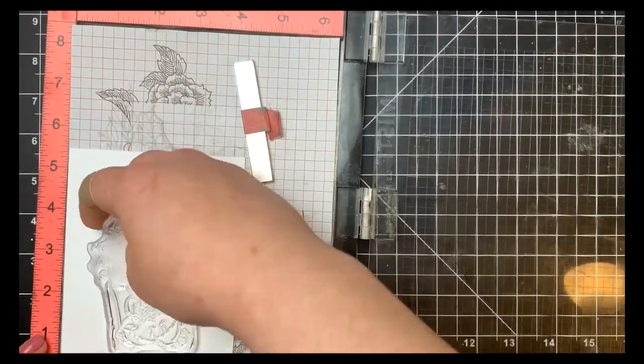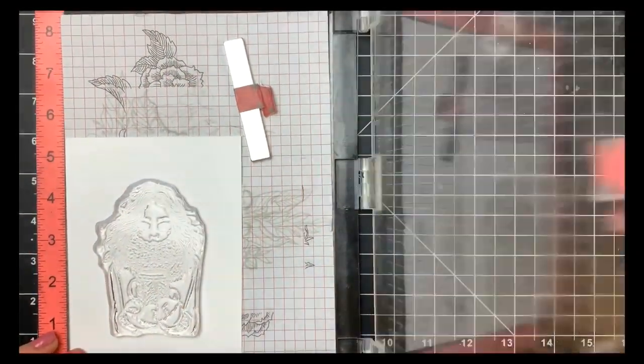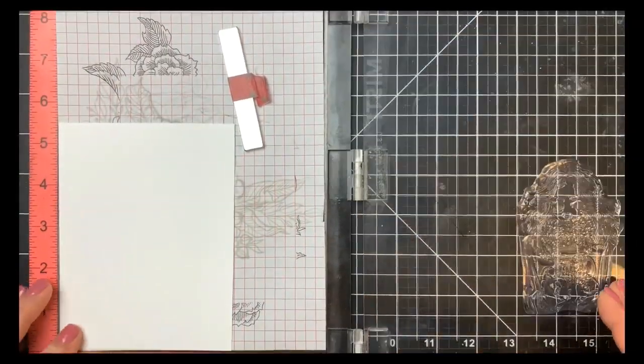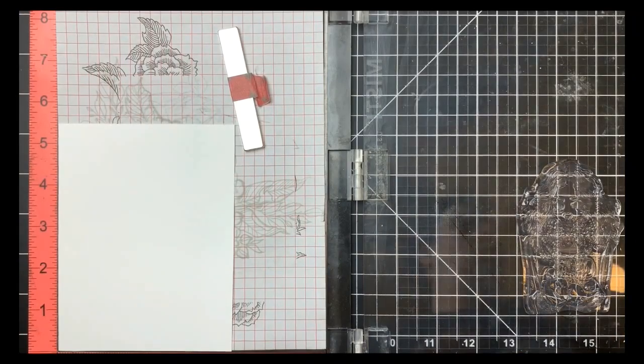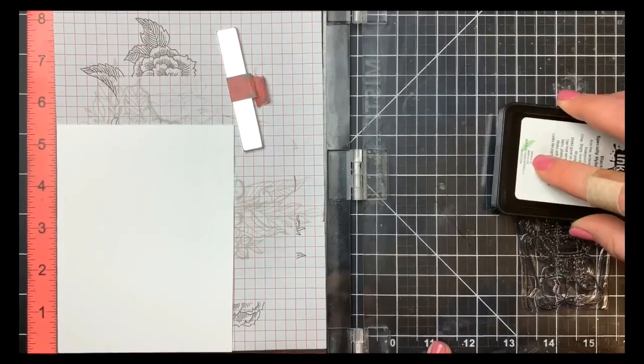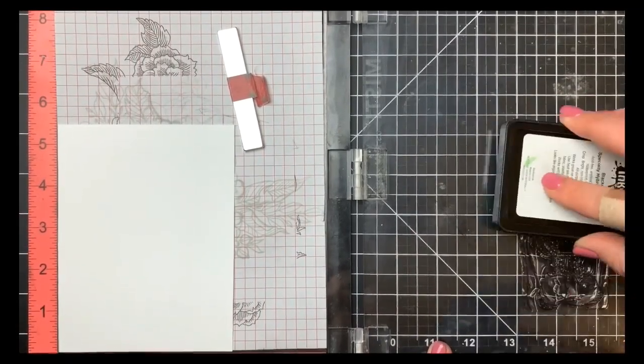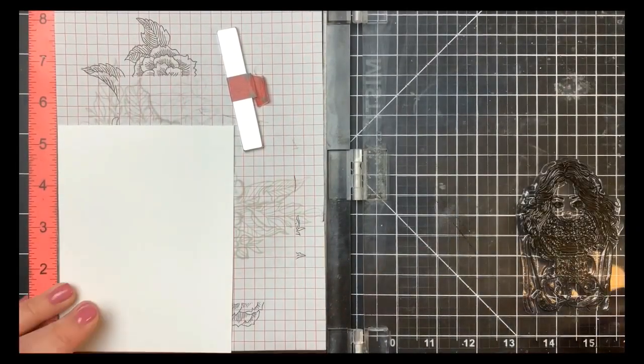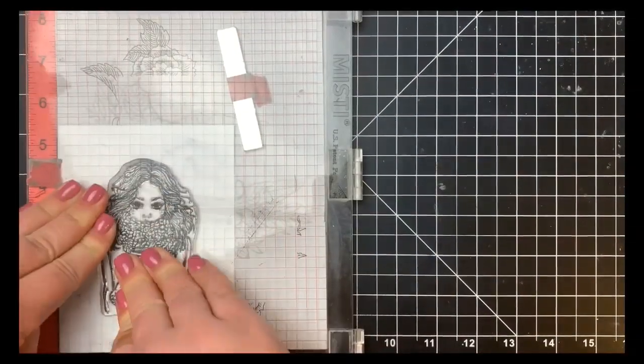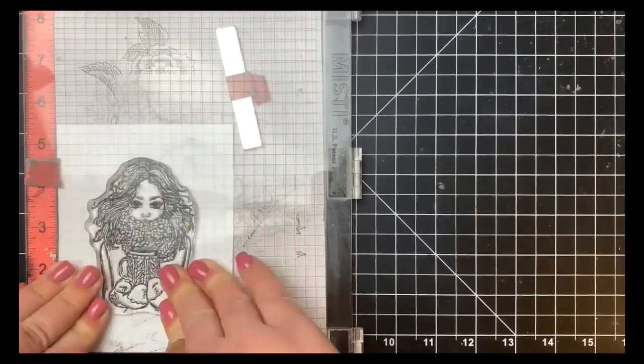We're going to start off with the card. I'm using my Misti here to stamp out my image because it's a pretty large image and I've never stamped it before. Sometimes you don't always get a great impression the first time around. I'm stamping with Blackout ink by InkOn3 onto Neenah Solar White 80-pound cardstock, and I'll be using a die cut for this, so placement doesn't matter too much at this point.